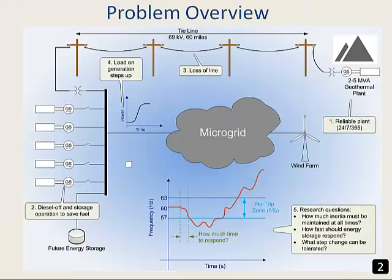Here is a problem overview. Consider the 5 megawatt microgrid in Nome, Alaska which is powered from a single diesel unit. The town is considering adding 2 to 5 megawatts of geothermal power to reduce fuel costs. While geothermal power is steady all year, there is uncertainty in the reliability of the line.